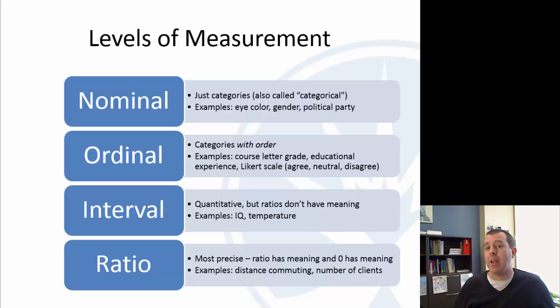And also zero has meaning. So distance commuting, if you're taking this class online and it's the only class that you're taking online, or the only class you're taking, your distance commuting is zero. And that has meaning. That means you don't commute. You don't take any classes on campus. You could have zero clients. And so those last two I think are the hardest ones to really wrap your head around, but those are some examples.